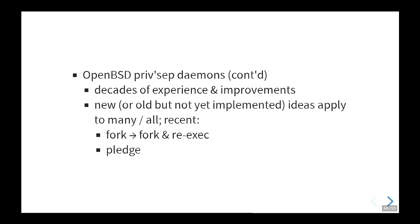Two recent examples: previously we only did a fork for the unprivileged children — the child drops to a different user and runs unprivileged, but the downside is it has the same address space as the parent. So an information leak in the child could be used to attack the parent. With fork-and-re-exec, you get a different memory layout. Another recent addition is pledge, which then applies to all the daemons.